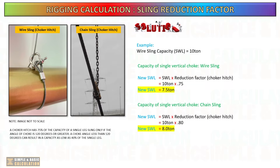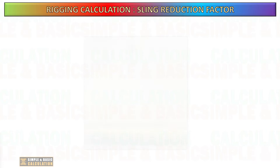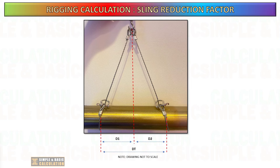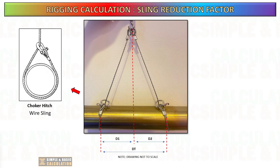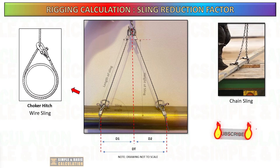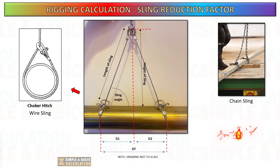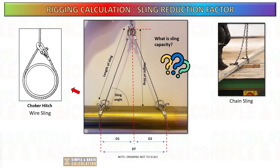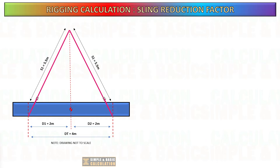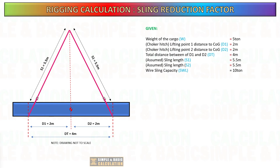Next, how about when using a two-leg or four-leg choker hitch — what is the reduction factor we need to consider? The angle formed between the legs of the sling in a choke configuration affects the sling's capacity. As the angle decreases, the load on each leg of the sling increases significantly, leading to a reduction in the sling's overall capacity. This phenomenon is similar to the sling reduction factor discussed earlier, where the angle from the horizontal plane affects the effective load on the sling.